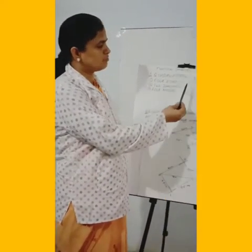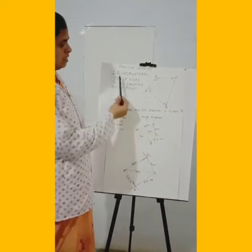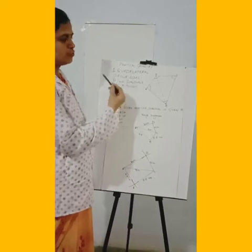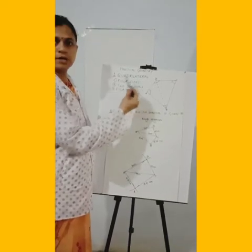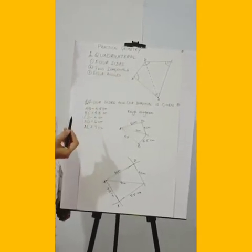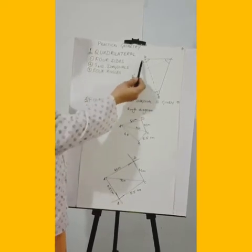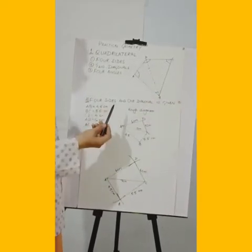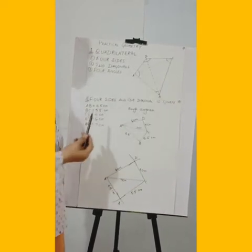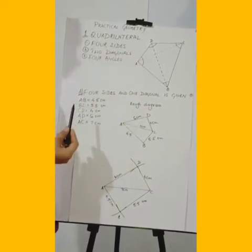For the construction of a quadrilateral, we need to understand what a quadrilateral is. The word 'quad' stands for 4 and 'lateral' for line. So quadrilateral means 4 sides or 4 lines — a geometrical figure which is made by joining 4 line segments is said to be a quadrilateral.